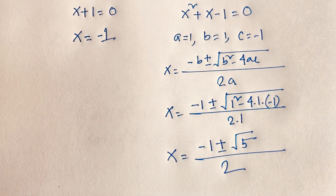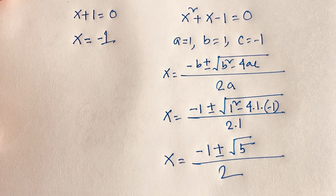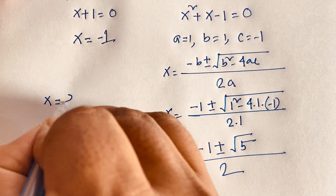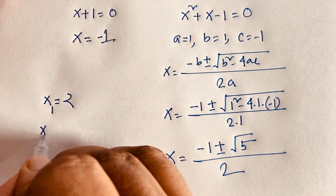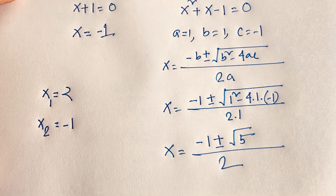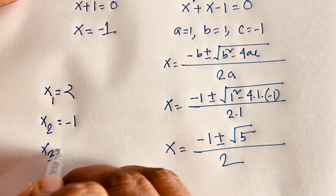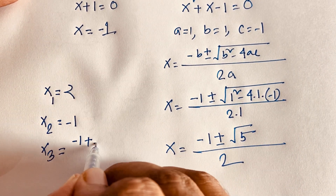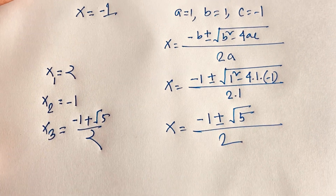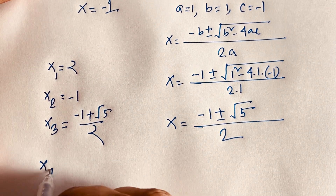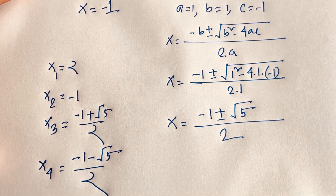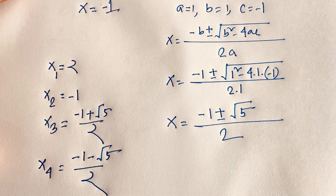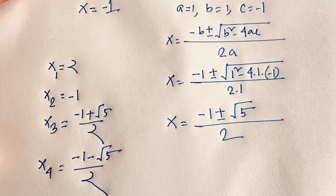So our final answers are: x₁ = 2, x₂ = -1, x₃ = (-1 + √5) / 2, and x₄ = (-1 - √5) / 2. This is our final answer to this maths question. Thank you all — if you enjoyed this video, please subscribe to my channel for other interesting videos. Goodbye, take care.